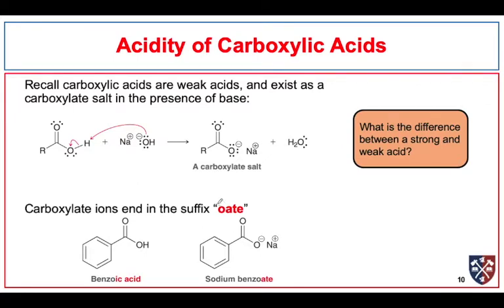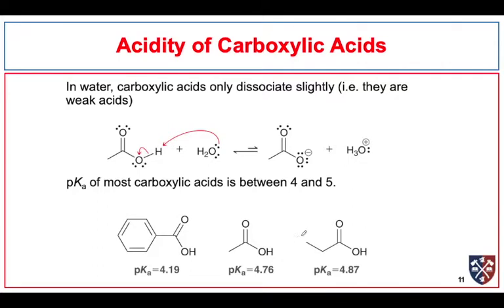They're called carboxylic acids, so as we might guess, they're decent acids — but they're weak acids. They will react with a strong base such as sodium hydroxide to completely deprotonate and form the carboxylate salt. When we have the negative anion — the conjugate base of the carboxylic acid — we give it the 'oate' ending and talk about it as a carboxylate. So benzoic acid makes sodium benzoate. In water, carboxylic acids only dissociate slightly because they're weak acids; this equilibrium lies to the left and favors the protonated form. The pKa for most carboxylic acids is somewhere between about 4 and 5.